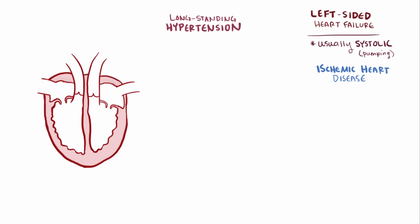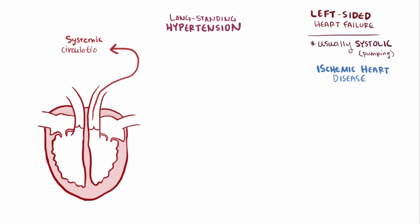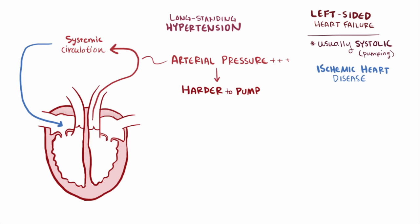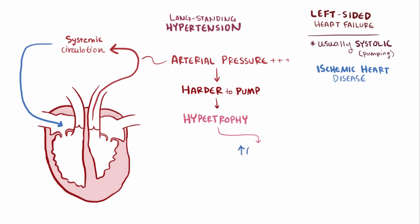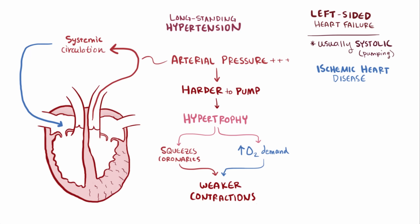Long-standing hypertension is another common cause of heart failure. As arterial pressure increases in the systemic circulation, it gets harder for the left ventricle to pump blood out. To compensate, the left ventricle bulks up and its muscles hypertrophy. This increases oxygen demand, and the coronaries get squeezed down by the extra muscle so even less blood is delivered to the tissue. More demand and reduced supply means ventricular muscles start to have weaker contractions, leading to systolic failure.